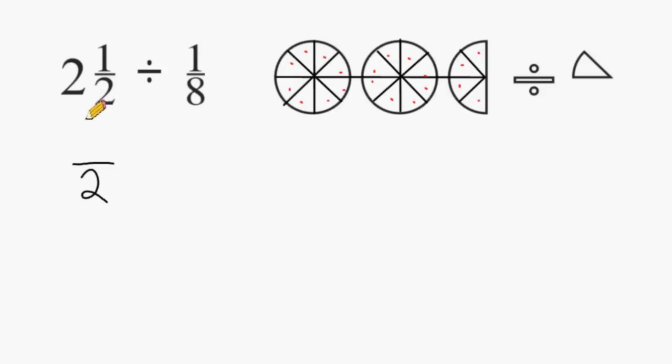and 2 times 2 is 4, and then we add the numerator to that product. And 4 plus 1 is equal to 5.